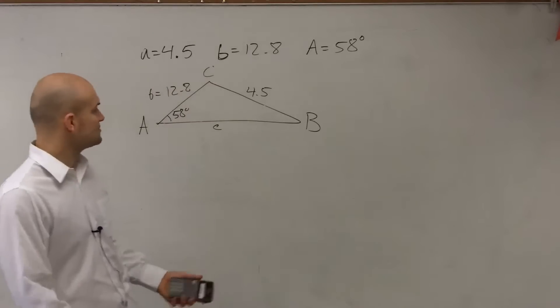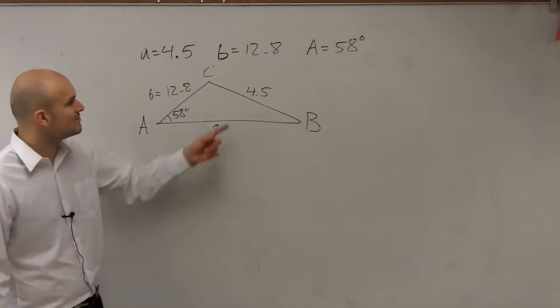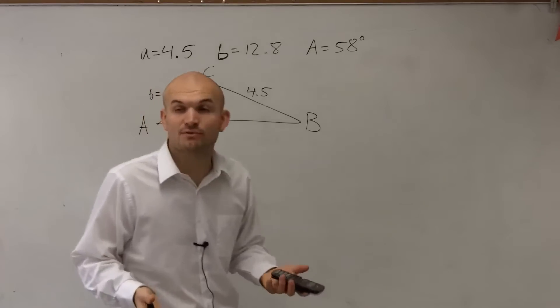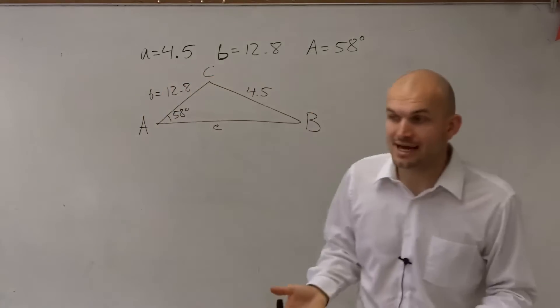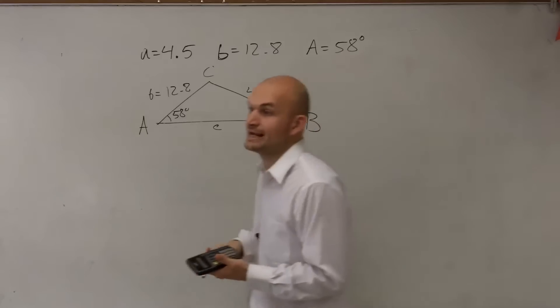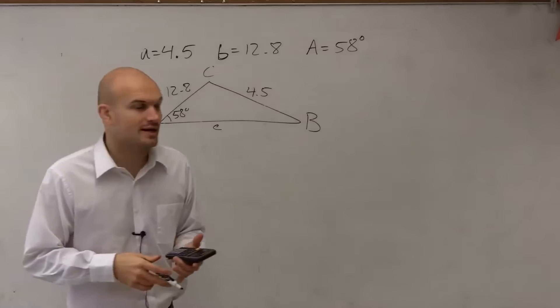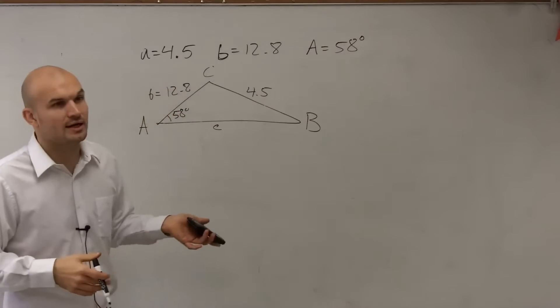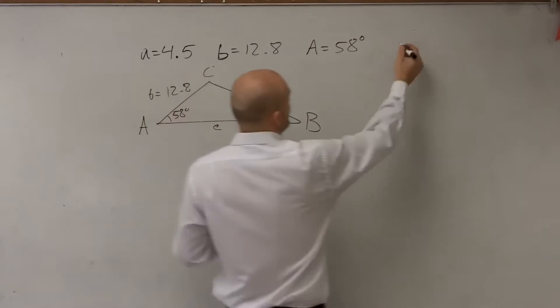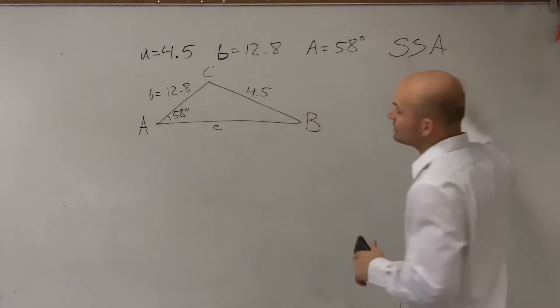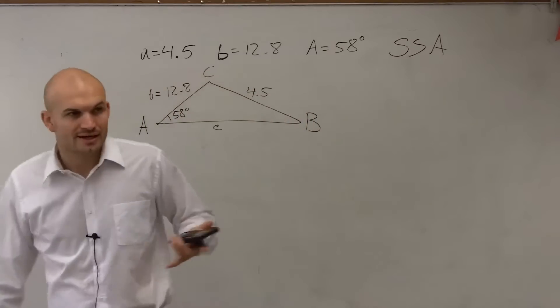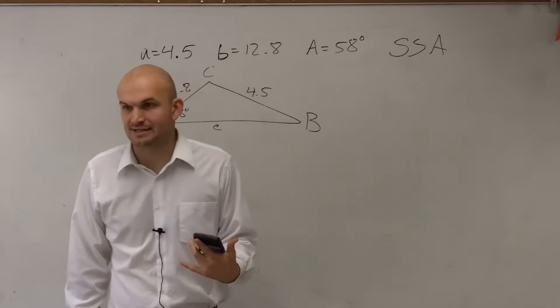So by looking at this, what you guys can notice is I have side-side-angle. Now this is a different one than the problems that we worked on last class period. Last class period, we only worked on having like an angle-side-angle or having angle-angle-side. But now we're working with the problem with side-side-angle. And the important thing for you guys to understand when working with triangles, when you have a side-side-angle, is this is what we call our ambiguous case.